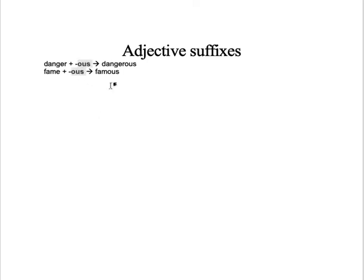Suffix number two: for example, 'music' plus '-al' so that you have 'musical', or for example 'emotion' plus '-al' and that way you have 'emotional'.